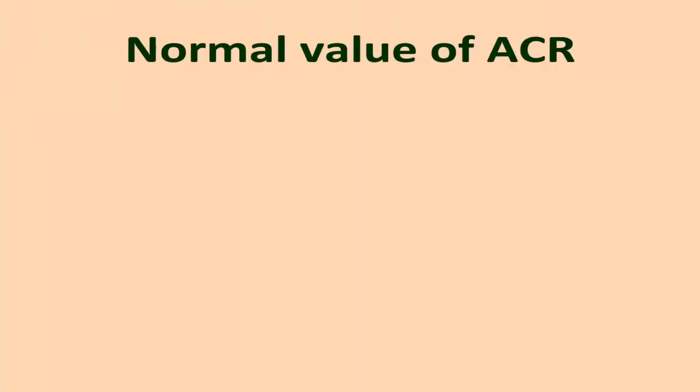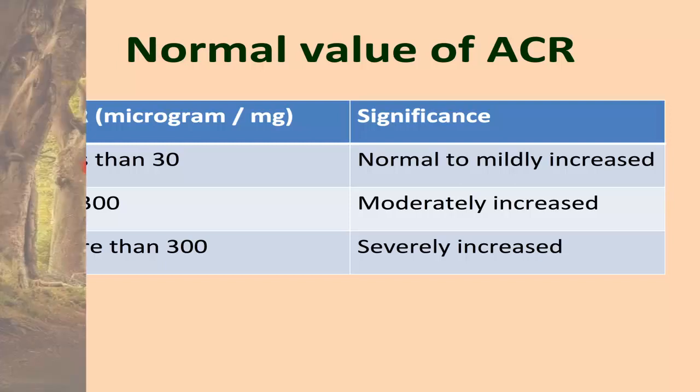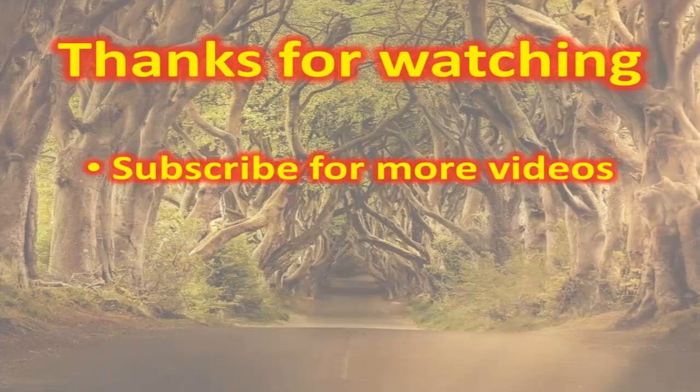Normal value of ACR: values below 30 indicate normal to mildly increased albumin level relative to creatinine. Values between 30 to 300 indicate moderately increased albumin level relative to creatinine. Values more than 300 indicate severely increased albumin level relative to creatinine.